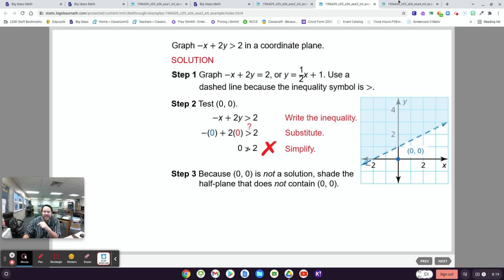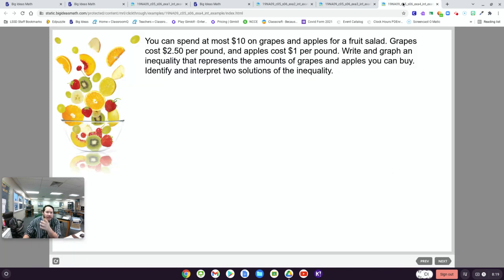And then the last thing is a story problem. So you're going to have problems like this. So you can spend at most $10 on grapes and apples. Grapes cost $2.50 per pound. Apples are $1 per pound. I'll wait till that announcement's done. Thank you. And it's done. And then let's first come up with an inequality that states that you have at most $10 to spend. All right. Let's see what you came up with.